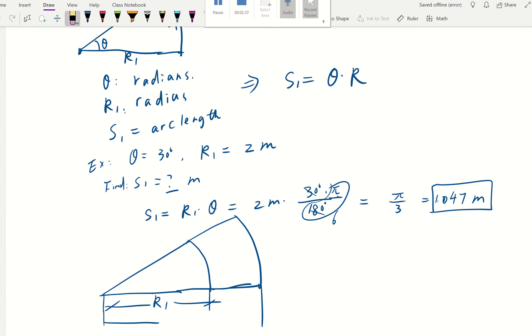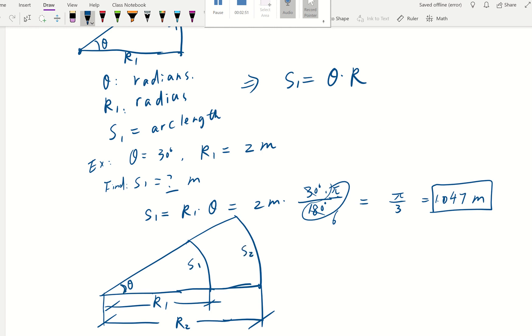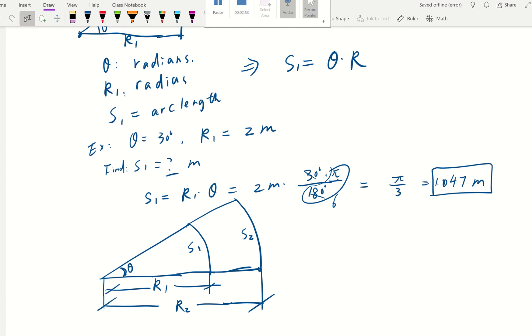They share the same angle theta here, and then this will be smaller arc length, this would be larger arc length. Because what do we know? Because theta in radians is equal to arc length over radius, right?